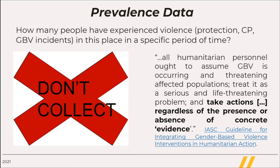The good news is that the usefulness of prevalence data is deeply overestimated. We do not need to know how many cases of violence there are in a community to decide to open a service to help survivors. There is an agreement in the humanitarian community, written down in the 2015 Interagency Standing Committee guidelines on gender-based violence, which states: all humanitarian personnel ought to assume GBV is occurring and threatening affected populations, treat it as a serious and life-threatening problem, and take action regardless of the presence or absence of concrete evidence. So let's learn to program and work without such prevalence data, and collect the data we really need — for example, information on dynamics and common patterns of protection incidents, which groups are most at risk for each type of violence, and which elements increase or decrease the risk of violence for each group.